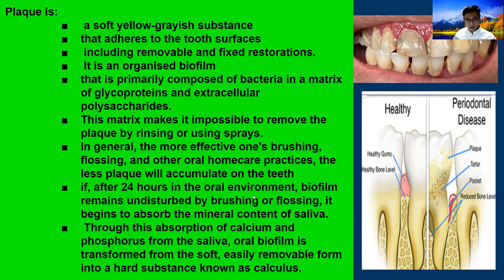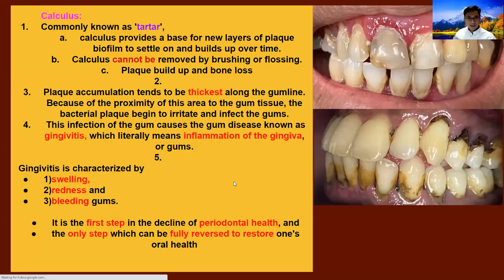After 24 hours in the oral environment, if the biofilm remains undisturbed by brushing and flossing, it begins to absorb the mineral content of saliva. So when it's been 24 hours and you don't brush, your plaque will absorb calcium or phosphorus from saliva and it's transformed from a soft, easily removed substance into a hard substance known as calculus. Within 24 hours it can turn into hardened calculus if we don't remove it. Calculus is commonly called tartar — it's the base of new layers of plaque biofilm that settle and build up over time. Calculus cannot be removed by brushing and flossing.